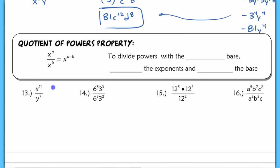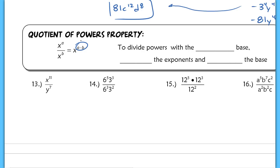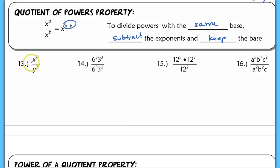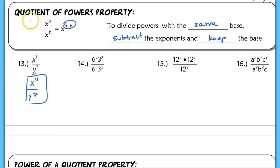Next, the Quotient of Powers property. When you see a quotient like x to the a over x to the b, you're going to subtract your exponents. To divide powers with the same base, subtract your exponents and keep your base. In number 13, since I do not have the same base, I cannot just subtract my exponents. My final answer is x to the 11th over y to the 7th — I can't do anything here because it doesn't follow this rule.